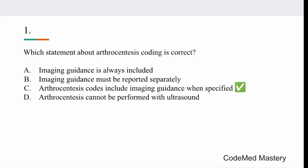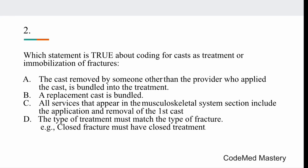Next question: which statement is true about coding for casts as treatment or immobilization of fractures? Option A: the cast removed by someone other than the provider who applied it is bundled into the treatment. Option B: a replacement cast is bundled. Option C: all services in the musculoskeletal system section include the application and removal of the first cast. Option D: the type of treatment must match the type of fracture — for example, a closed fracture must have closed treatment.